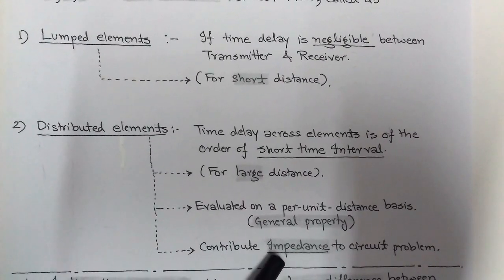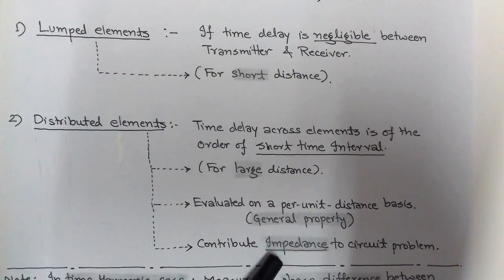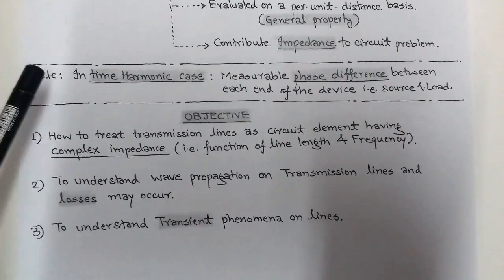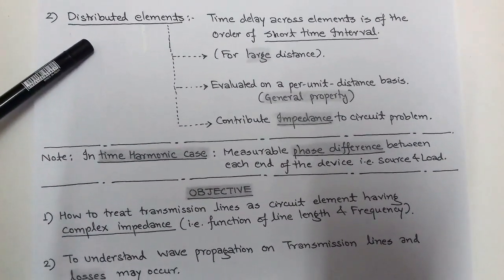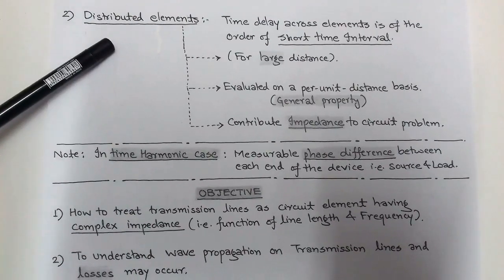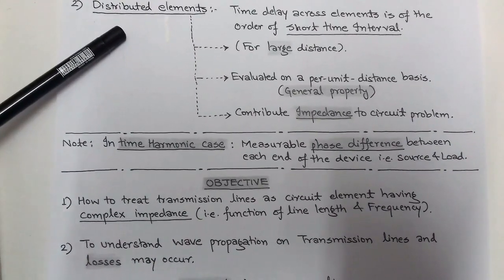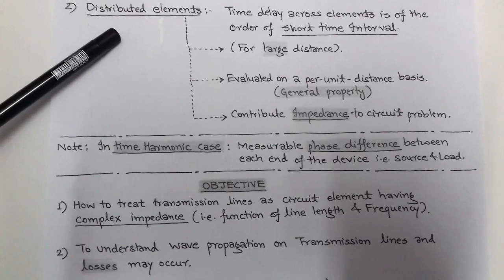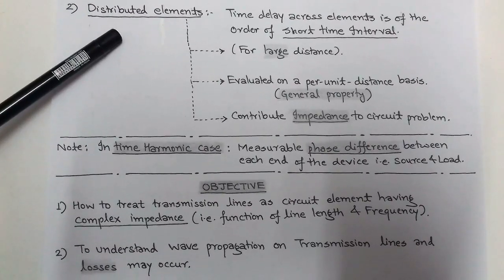The transmission line contributes some impedance to circuit problems, called line impedance or characteristic impedance. We discuss distributed elements which constitute a transmission line circuit. The basic elements — resistance, inductor, and capacitance — are present because electromagnetic energy propagates point to point through transmission lines, and there may be some charging and discharging elements that help propagate that energy from source to load.